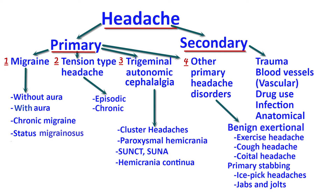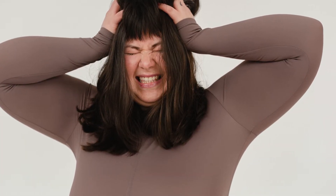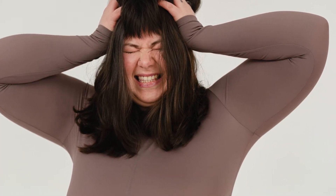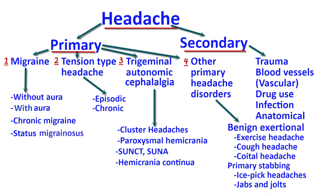Chronic migraine is migraine that occurs on 15 or more days per month, if at least eight of those days the headache is characteristic of migraine in terms of having all the accompanying symptoms such as photophobia, phonophobia, and nausea and vomiting. Status migrainosus is a form of migraine that lasts for more than 72 hours.